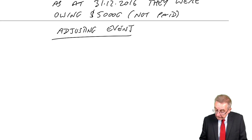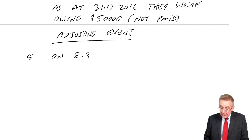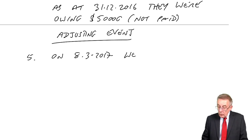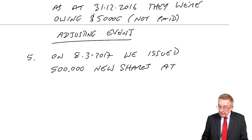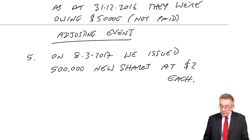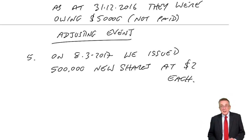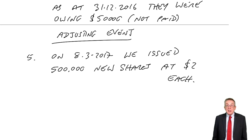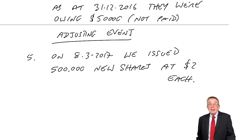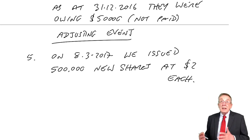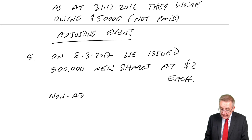What about this one? On 8th March 2017, we issued 500,000 new shares at $2 each. Would we adjust? No, we wouldn't. As of 31st December, we'd have been showing what shares were then in issue — this happened later. But because the amount is clearly material, although you won't adjust the accounts, you will disclose by note. Non-adjusting, disclose by note.